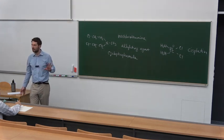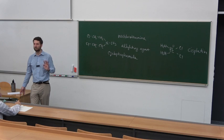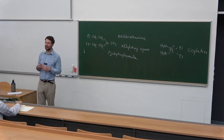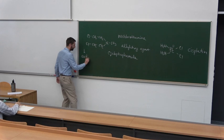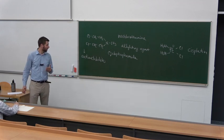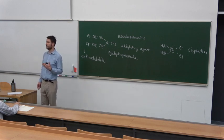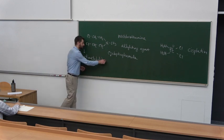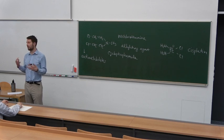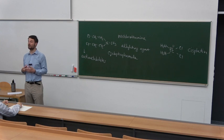The next large group of compounds are anti-metabolites. These interfere with the metabolism of nucleic acids. Many of them interfere with the metabolism of nucleotides, and some interfere with trafficking of DNA or nucleic acids overall.